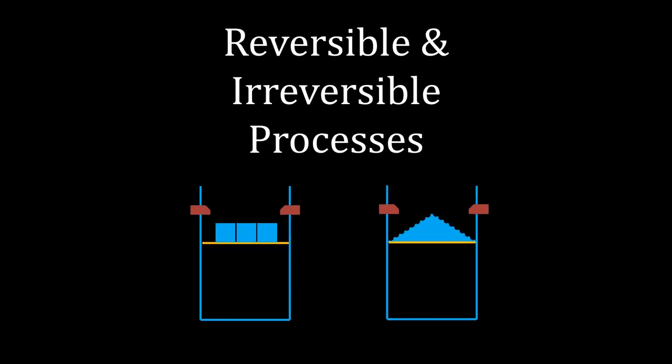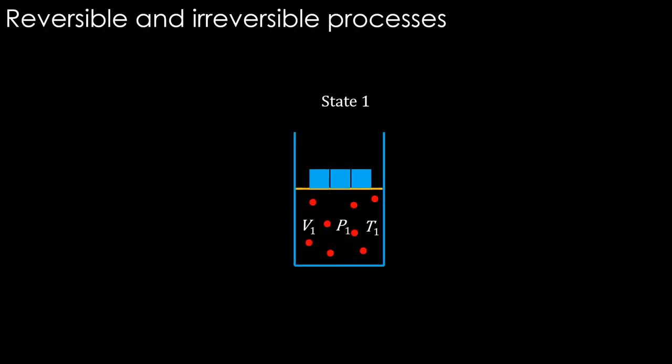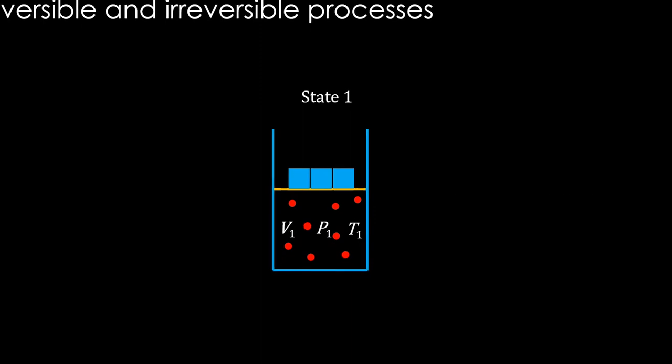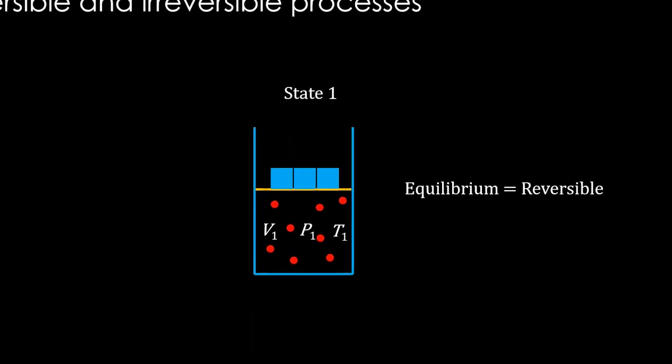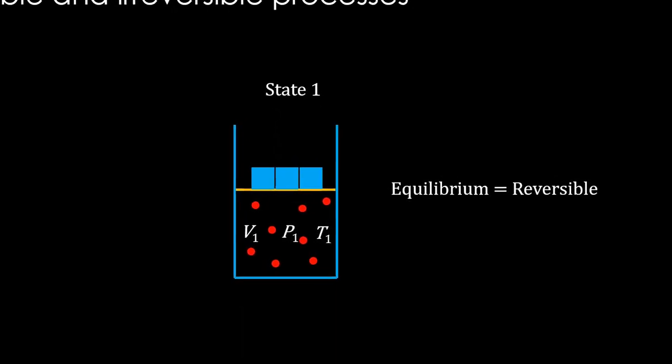Reversible and irreversible processes. Let's start with a gas at state 1 with a certain pressure, volume, and temperature. We are going to understand reversible and irreversible processes by moving this gas system to another state through two different routes. To start with, it is under equilibrium state, in other words, under reversible condition. Actually, nothing is happening. That is the true reversible process.